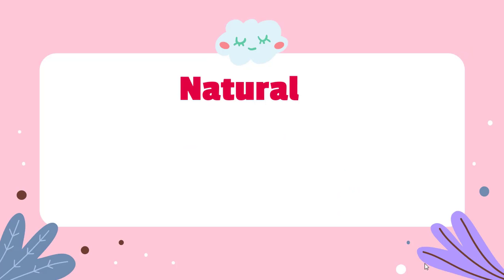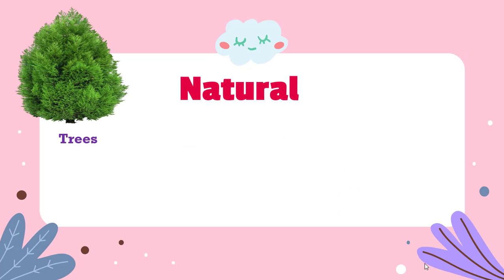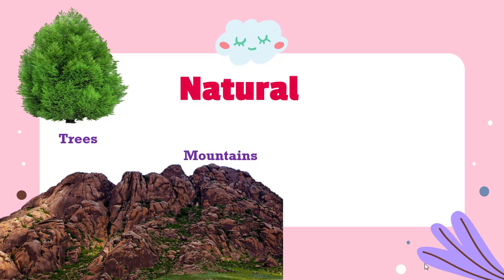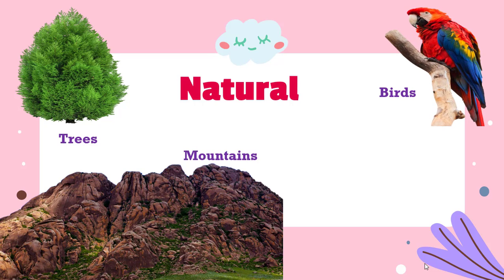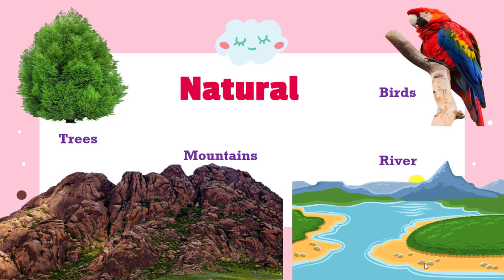Now what are the different natural things? Trees, mountains, birds, rivers, animals, human beings — all these fall in the category of natural things.